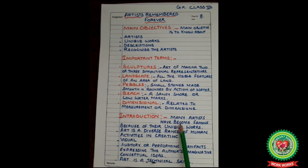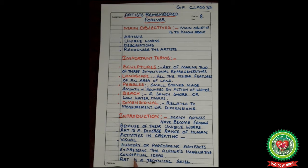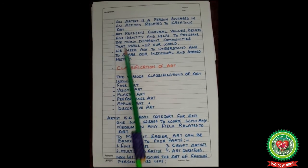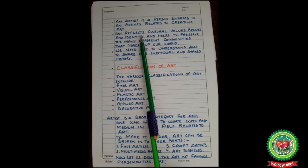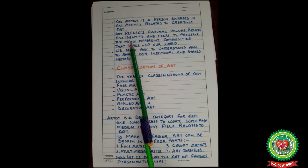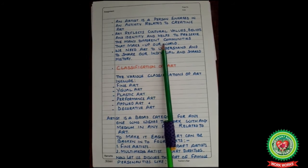Introduction: Many artists have become famous because of their unique works. Art is a diverse range of human activities in creating visual, auditory, or performing art, expressing the author's imaginative and conceptual ideas. Art is a technical skill. An artist is a person engaged in an activity related to creating art. Art reflects cultural values, beliefs, and identity, and helps to preserve the many different communities that make up our world.